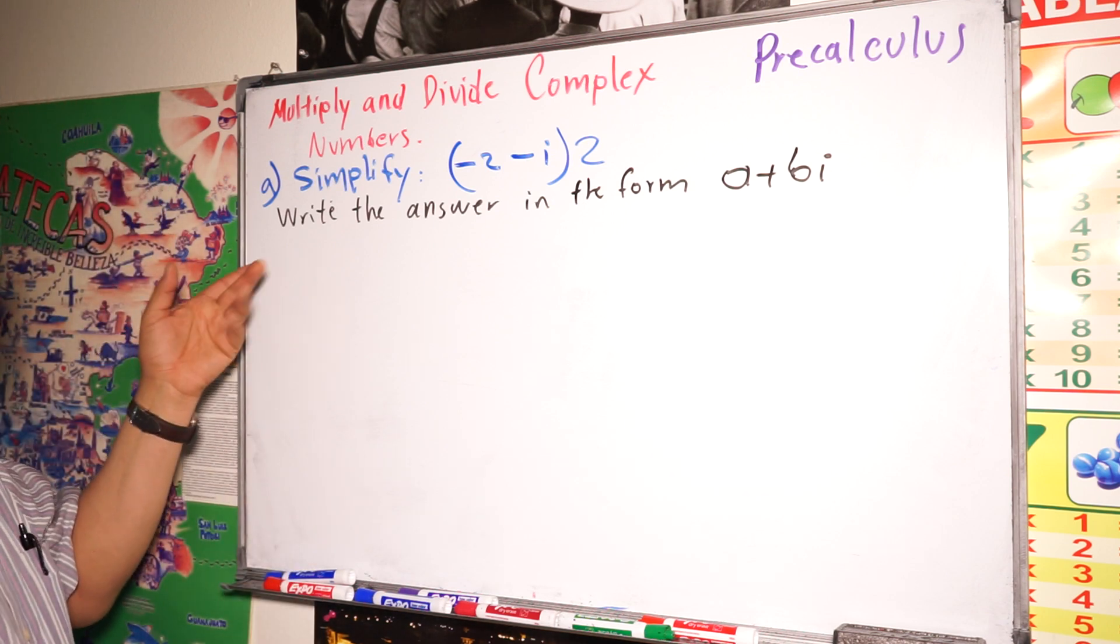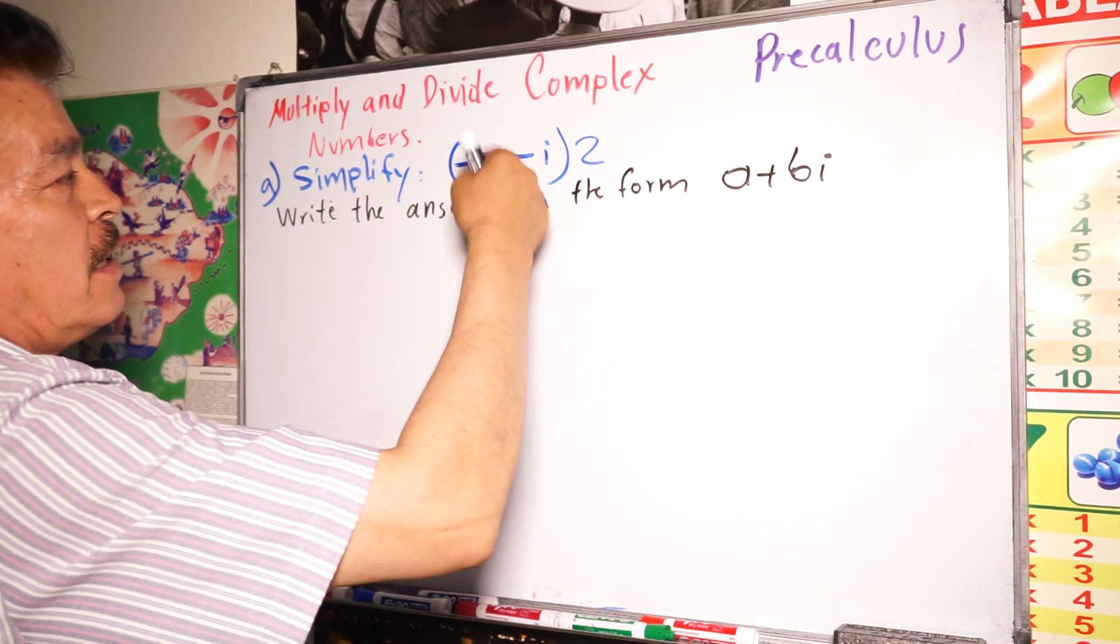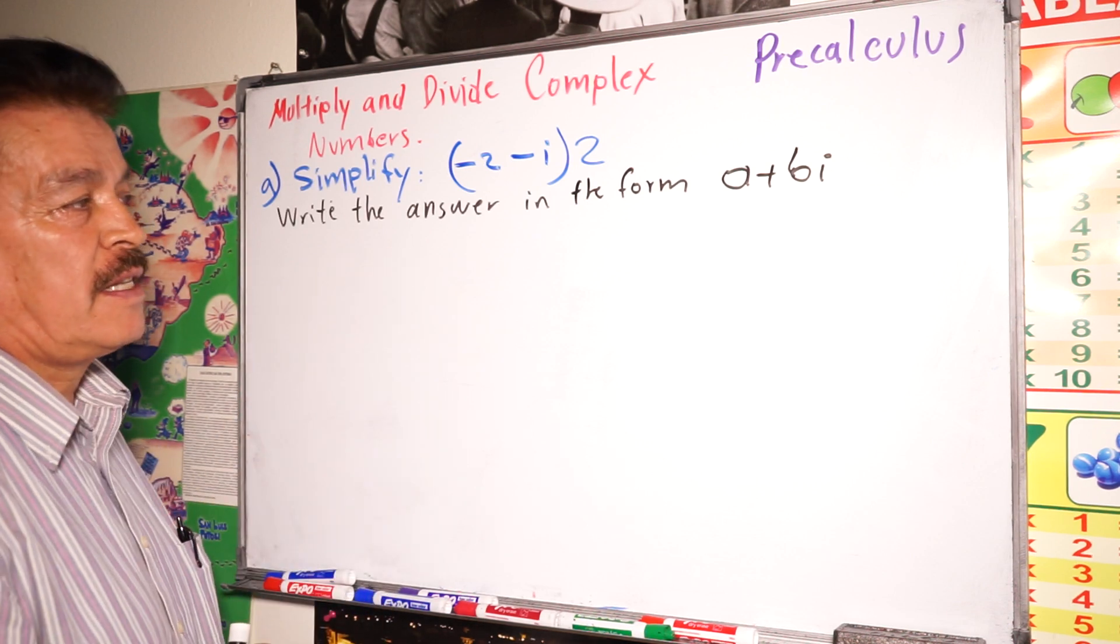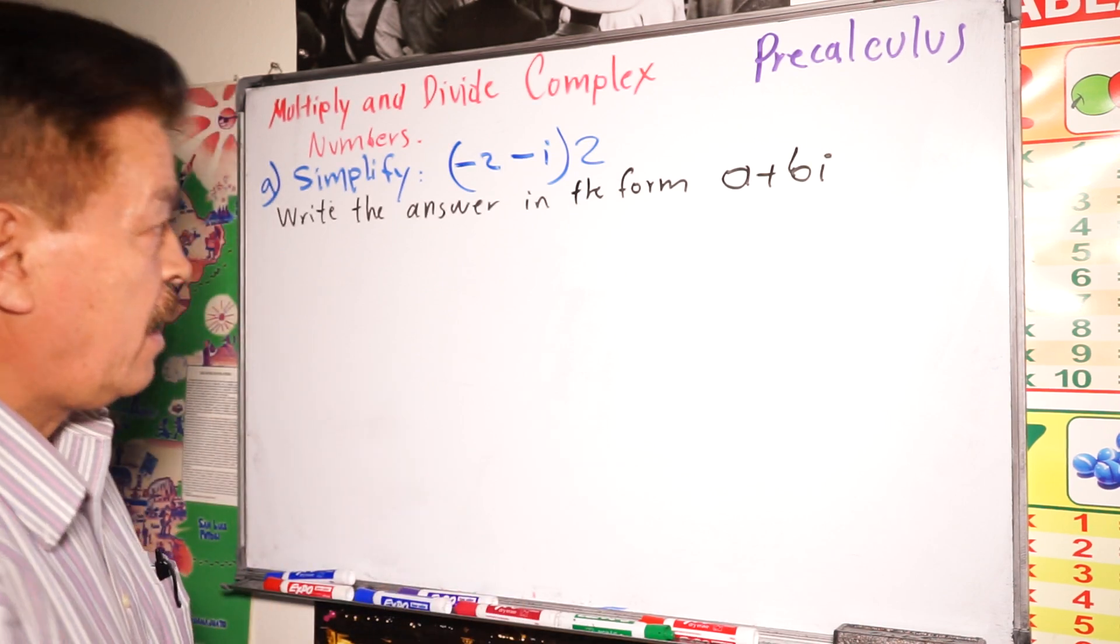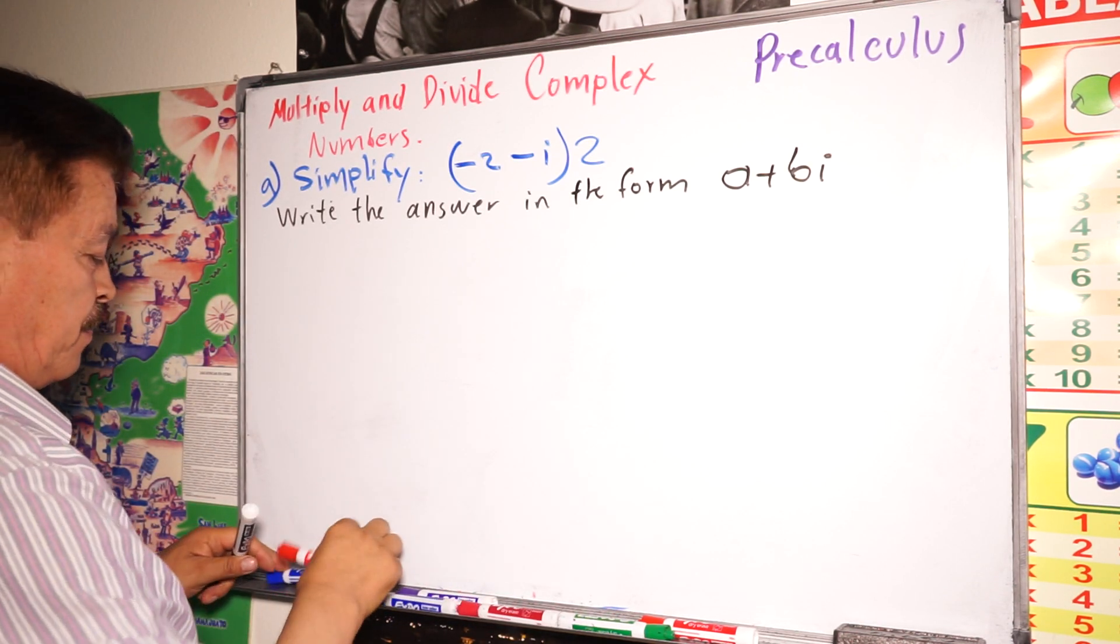This problem says simplify (-2 - i) × 2. Write the answer in the form a + bi. In this case, solve the problem.